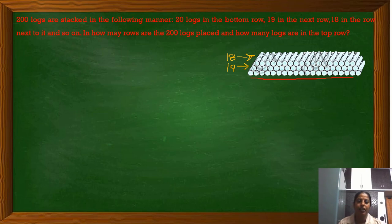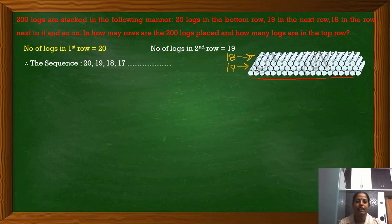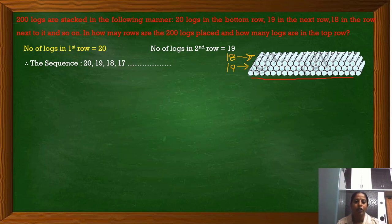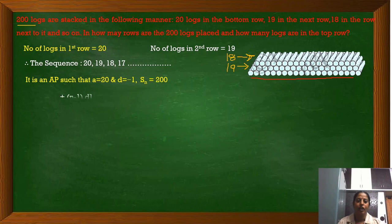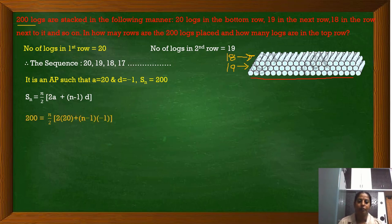The given problem involves an arithmetic sequence. The number of logs in the first row is 20, in the second row it is 19, then 18, 17, and so on — it is decreasing by 1. So the common difference is minus 1, the first term a is 20, and the total logs we have is 200. That means S_n equals 200. Substituting in the formula S_n equals n by 2 into 2a plus n minus 1 into d, we get 200 equals n by 2 into 2 times 20 plus n minus 1 into minus 1.